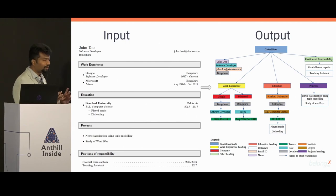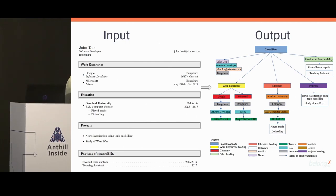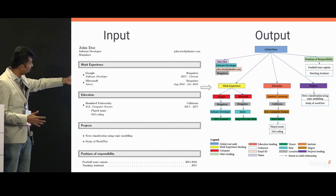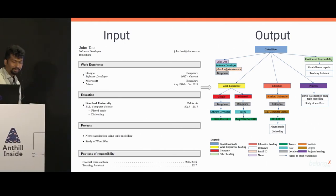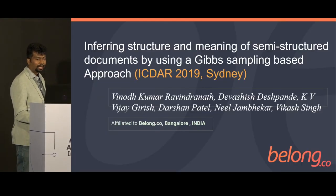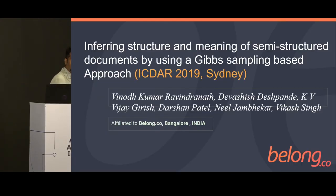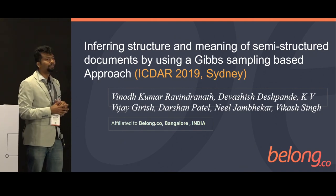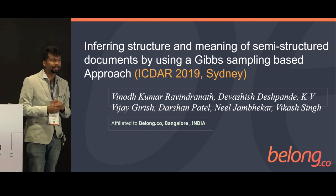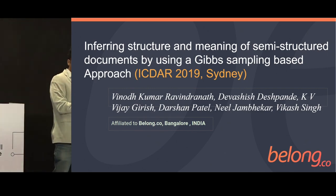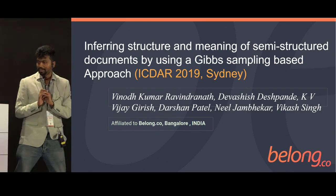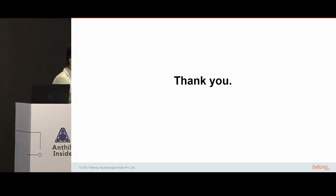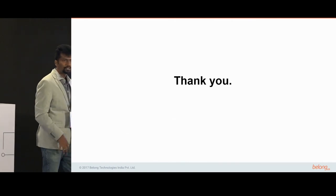Instead of sampling from the joint distribution, you sample from the conditional distribution, which is much simpler given the properties listed. We get a structure showing what each part means. We presented this work at ICDIR — you can search for it to get more details on the inference. Thank you all — I'm happy to take any questions.